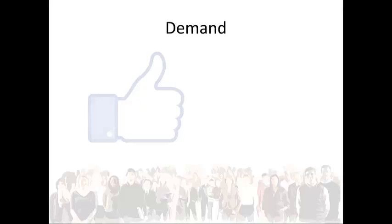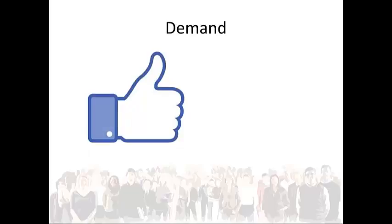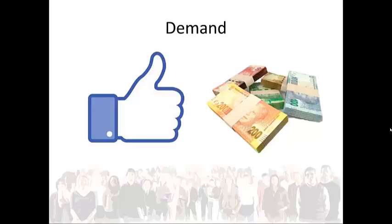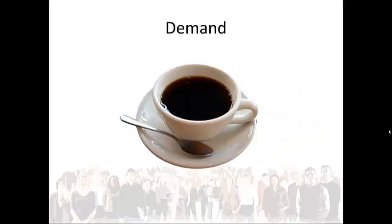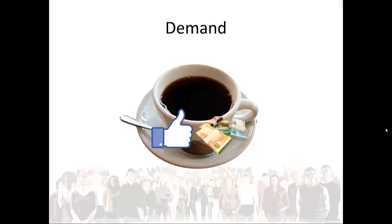There are two aspects to demand. First, it is what you like and want to buy. And secondly, it is about what you can afford. For example, Sally can only have a demand for coffee if she intends to buy the coffee and has the means to do so. When Sally both wants to and can afford to buy coffee, we say that Sally has an effective demand for coffee.